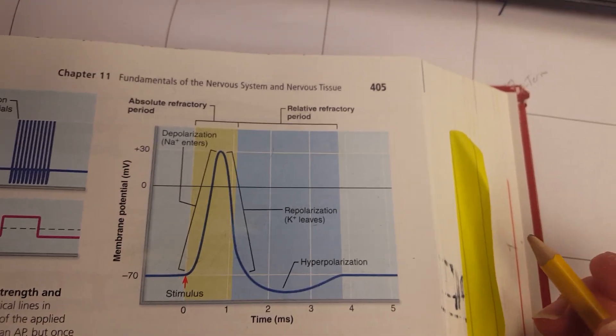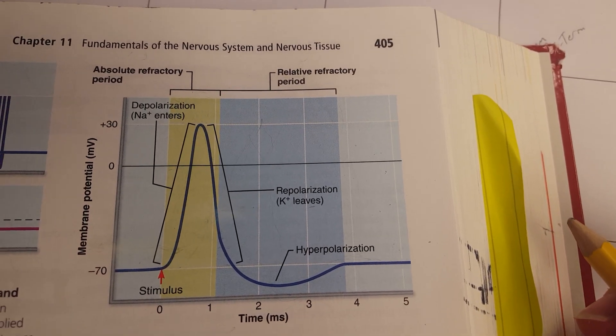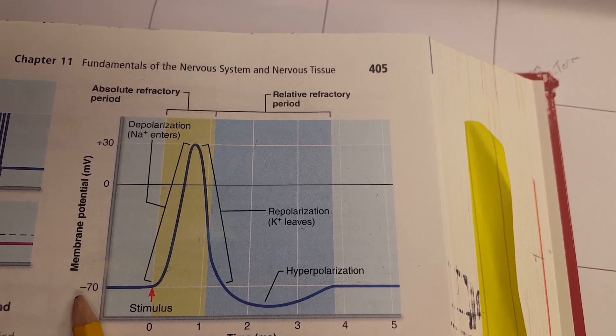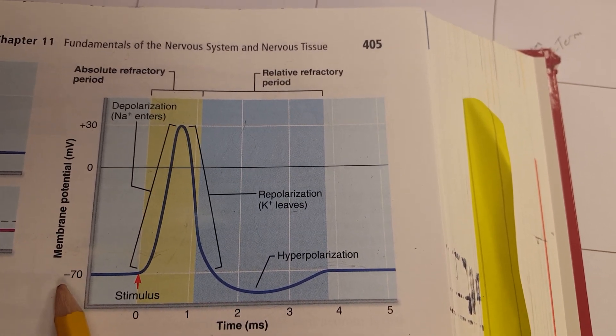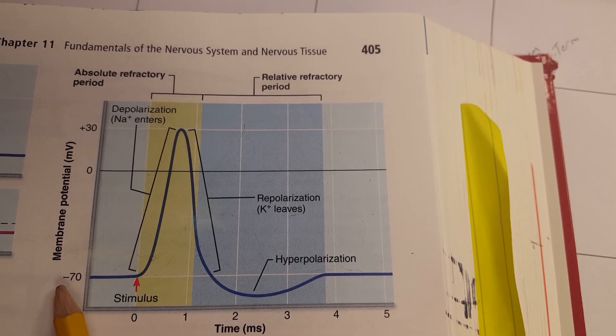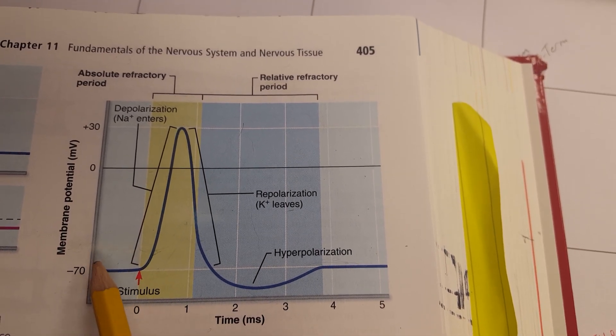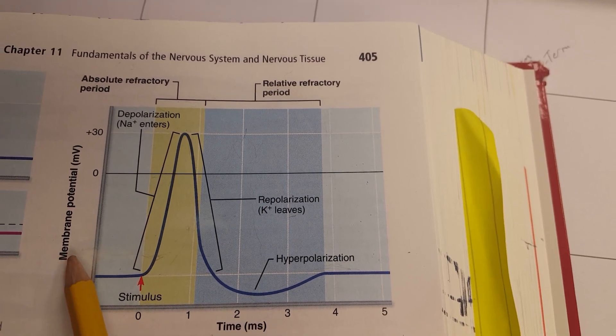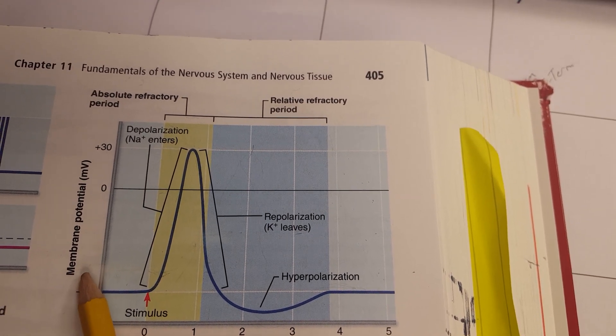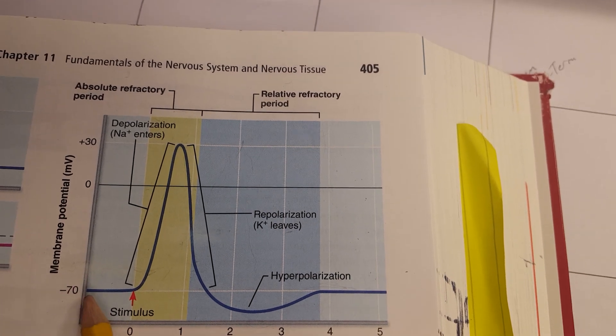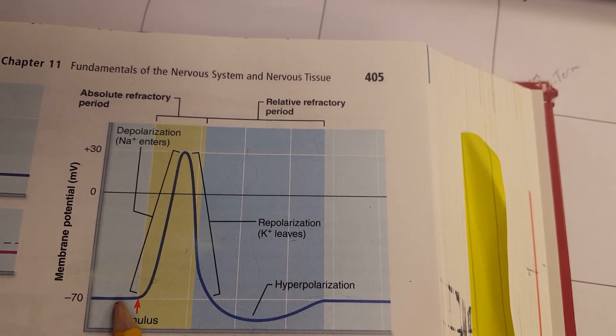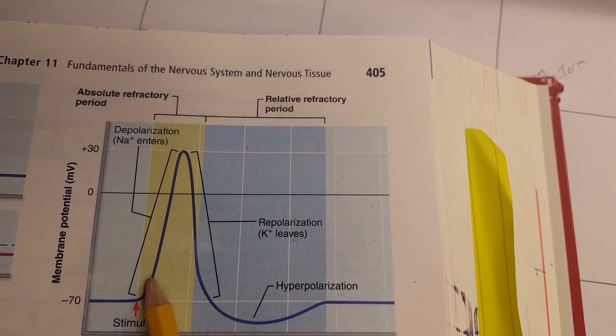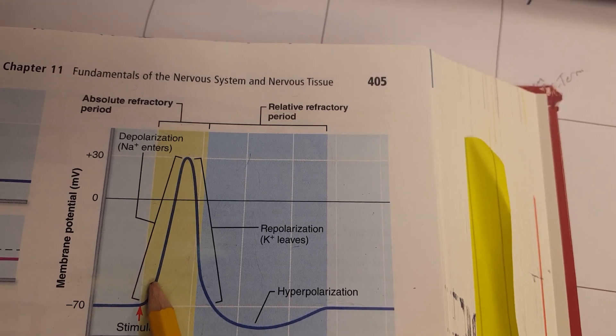Now this particular graph doesn't show it very well, however we know the resting membrane potential of a neuron can be measured at negative 70 millivolts. Normally we'd want to see a threshold of negative 55 over here so that we know when stimulus starts to depolarize the membrane. When it hits threshold, that's when the action potential occurs.